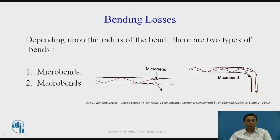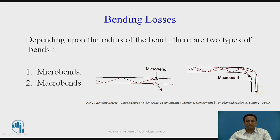To completely remove microbend losses, we have to re-manufacture the optical fiber — the core and cladding should be remade. For macrobend, the bend has a radius of curvature larger than the core radius. As shown in the figure, light shining inside the core is incident at the bend and escapes into the cladding, causing data loss. Not all light follows total internal reflection. That is the key difference between microbend and macrobend.